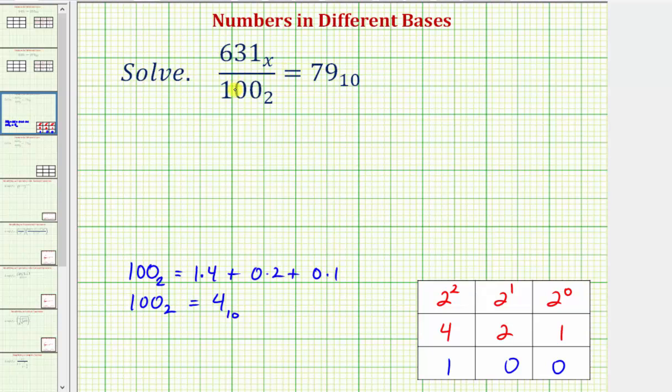So let's rewrite the equation as 631 base x divided by 4 base 10 equals 79 base 10. And now let's isolate 631 base x by multiplying both sides by 4 base 10. So we'll multiply the left side by 4 base 10, and we'll multiply the right side by 4 base 10.